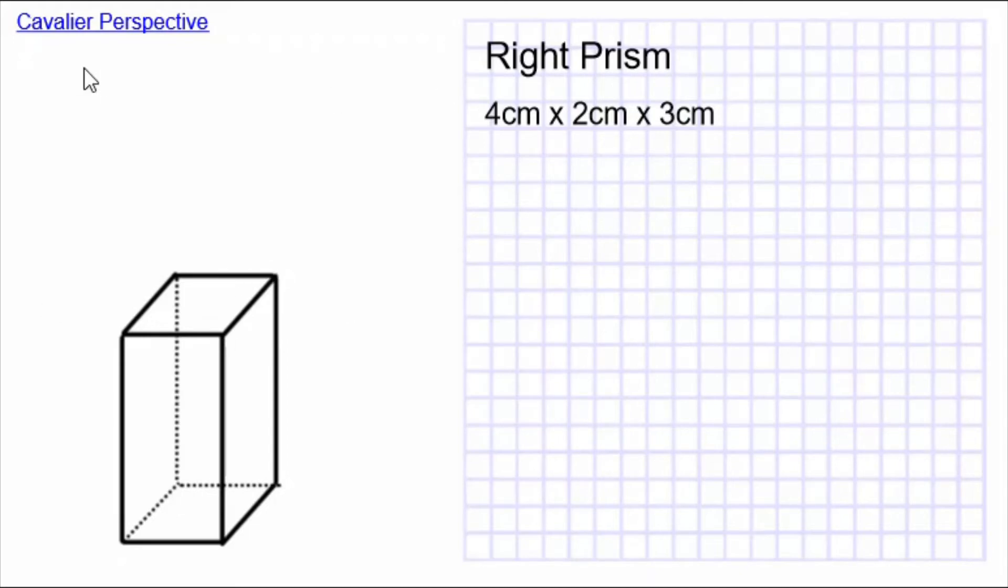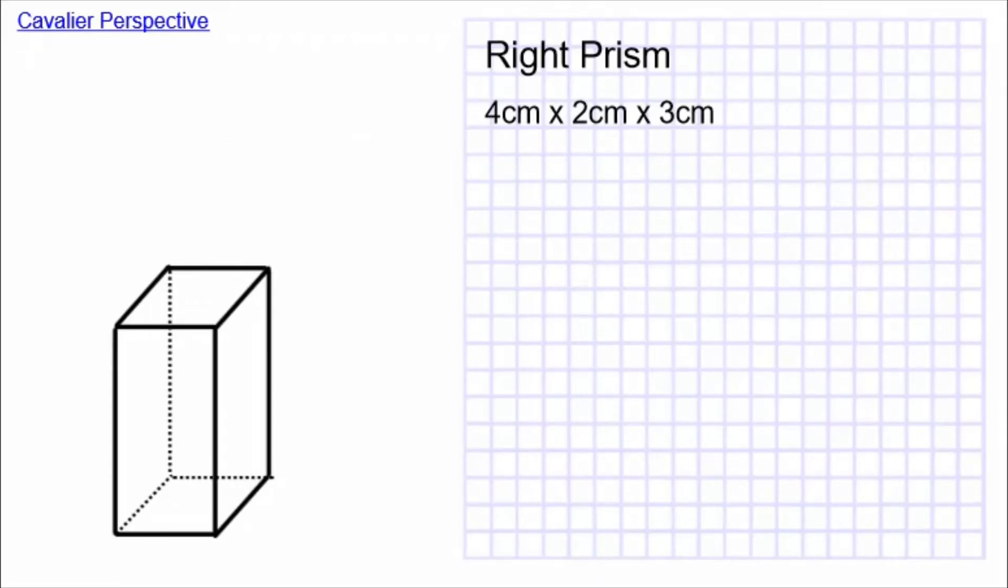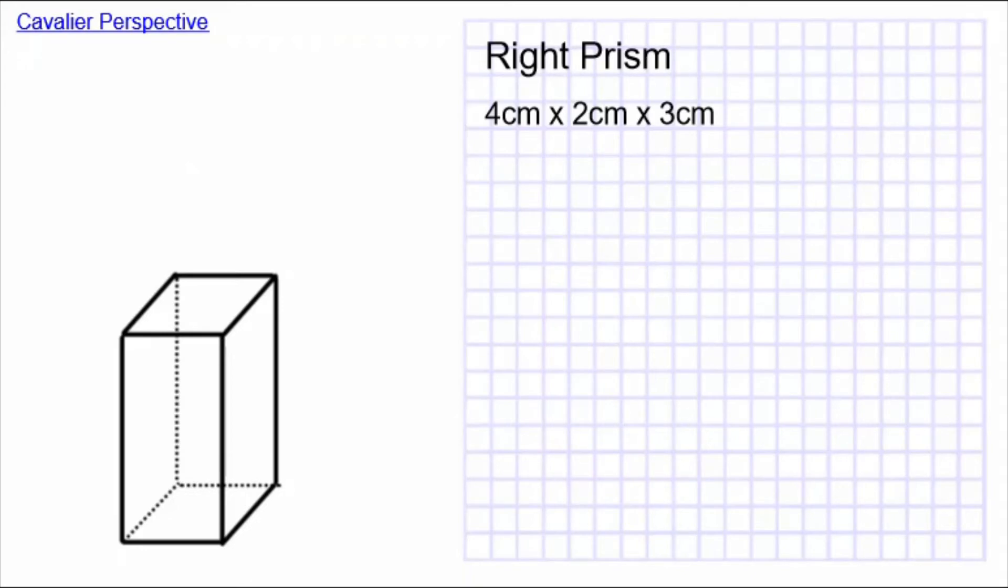So what are we going to do when we're asked to draw a right prism in Cavalier perspective? Well, there are several different ways of arranging this right prism for our drawing. And we can be asked to draw more than one of them. For instance, what if we're asked to draw this right prism with all three of the different possible faces being placed at the bottom? So let's do that.